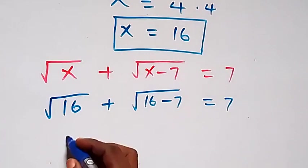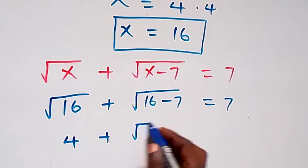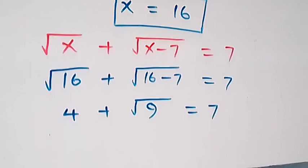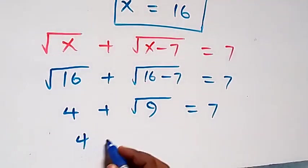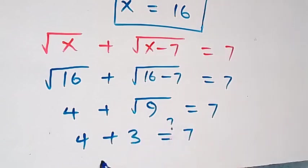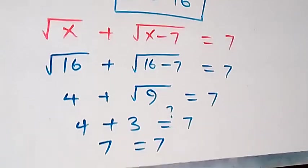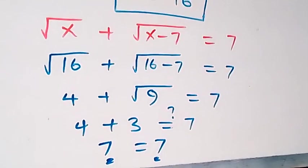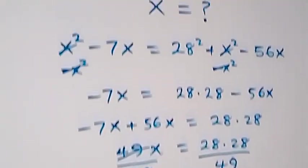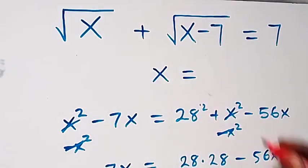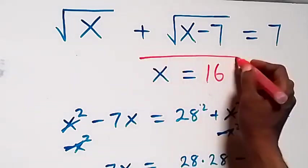Root 16 is 4, and 16 minus 7 is 9, so we have 4 plus root 9, which is 4 plus 3, equals 7. The left hand side equals the right hand side, confirming that x equals 16 satisfies the given problem.